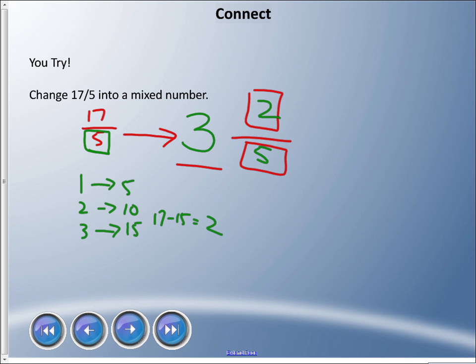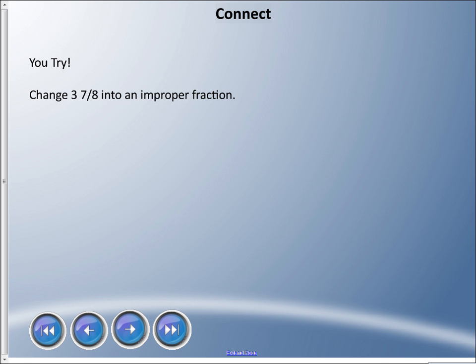Let's go the other way. Let's move this mixed number three and seven eighths into an improper fraction. You try it out.